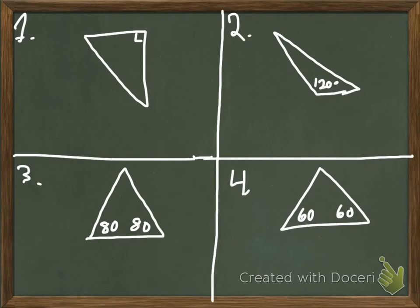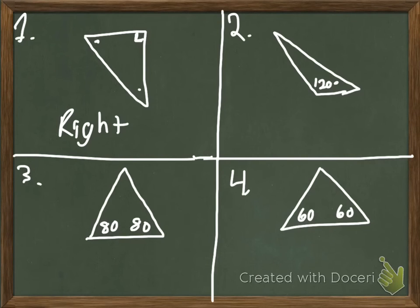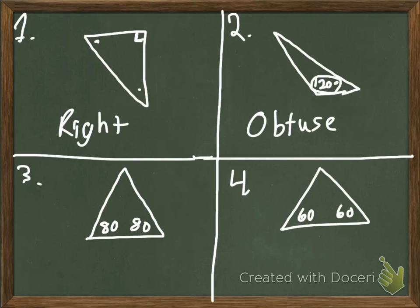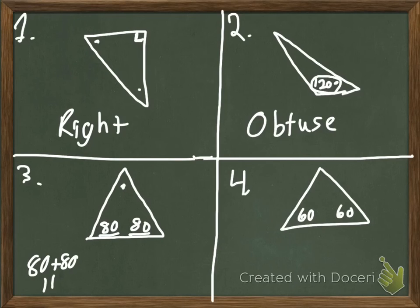Starting with number one — I see a right angle, which is a dead giveaway that it is a right triangle. Number two, this angle is 120 degrees, which is more than 90, meaning this is obtuse. Number three has angles of 80 and 80. Those are both acute, but I need to find the third. Since all angles add up to 180: 80 plus 80 is 160, so I need 20 more. Twenty is also less than 90, so this is the acute triangle.